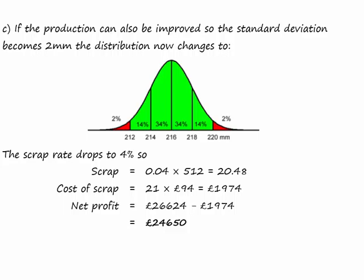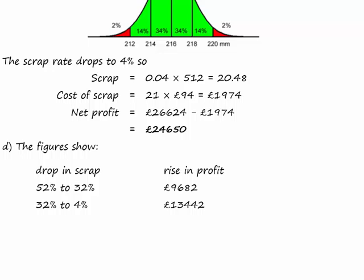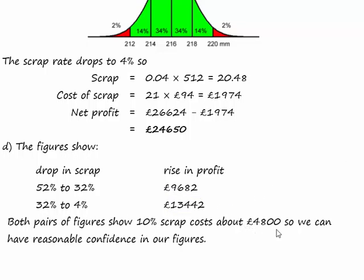Part D. For each of your answers, state why you think the answer's right. Well, the change from 52% scrap to 32% scrap gives us a rising profit of £9,682. And the change from 32% down to 4% gives us a rising profit of £13,442. So roughly that's £4,800 for each 10%. Double £4,800 we get about £9,600, and triple that we get the £13,500. Each of these rows gives us the same increase in profit, so we can be reasonably confident that our model is correct.